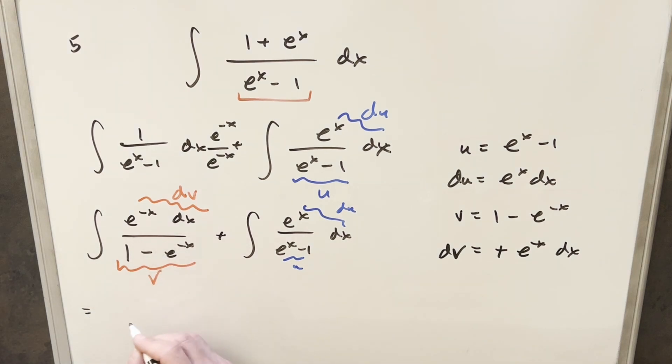So 1 over v, this is going to give me natural log absolute value of v. And this one's going to be natural log absolute value of u. We just need to back substitute here and here.